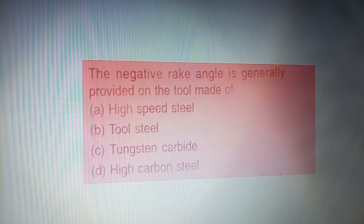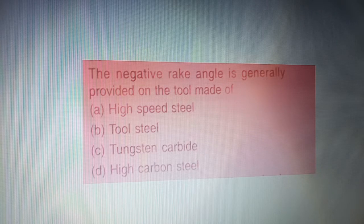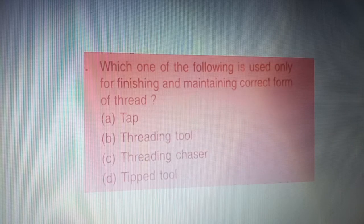Your next question is: the negative rake angle is generally provided on the tool made of — four options are given on your screen. The correct answer is option C — tungsten carbide.